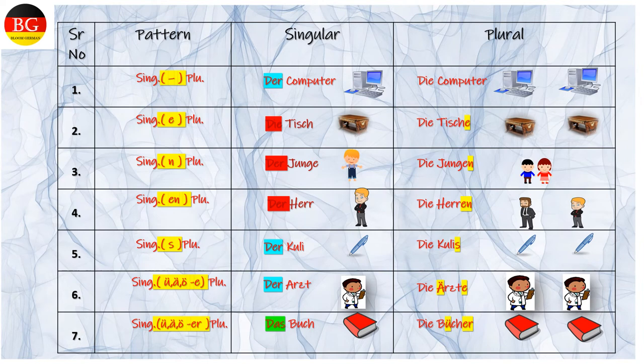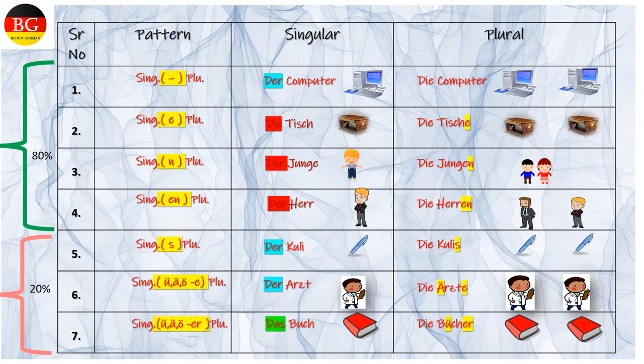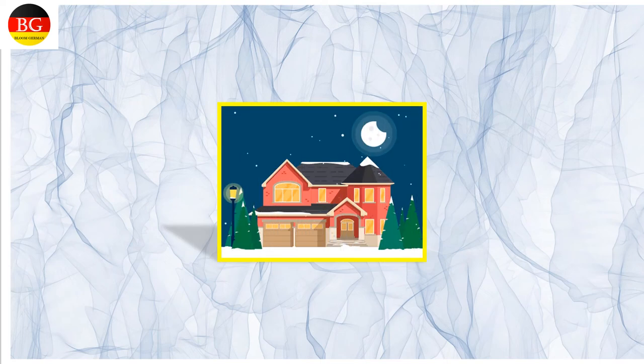If you pick up any German book and write down all the nouns for these seven different patterns, then you will notice that mostly the nouns are belonging to the first four patterns and remaining goes with the last three. Now, it's time to learn the technique of memorizing the German nouns along with their plural. The best way is to start memorizing the objects in your surrounding.